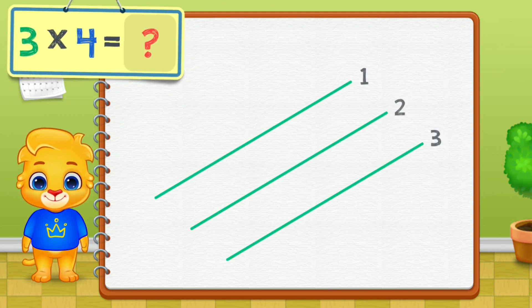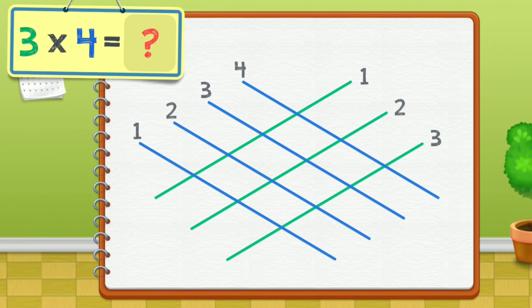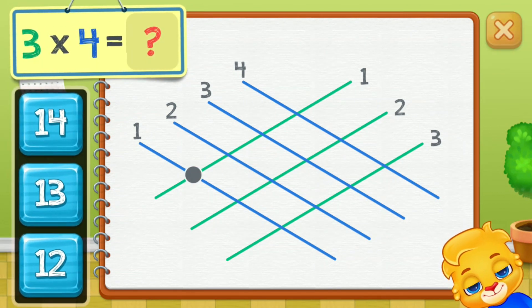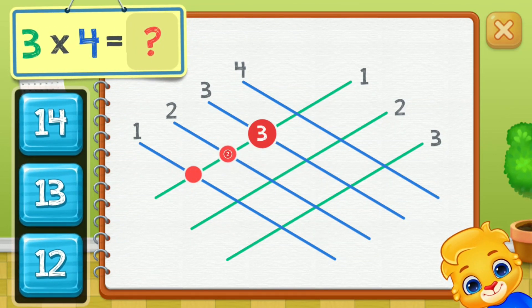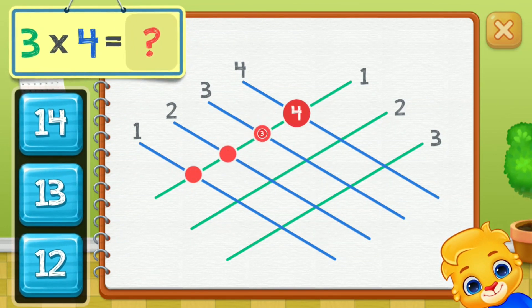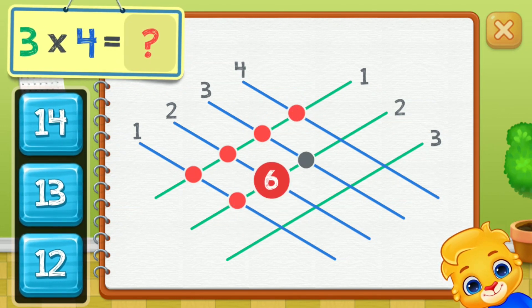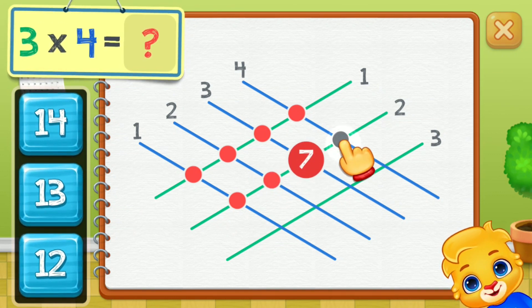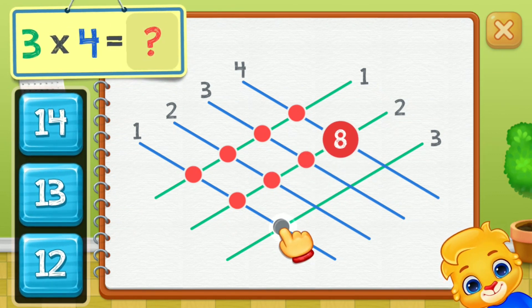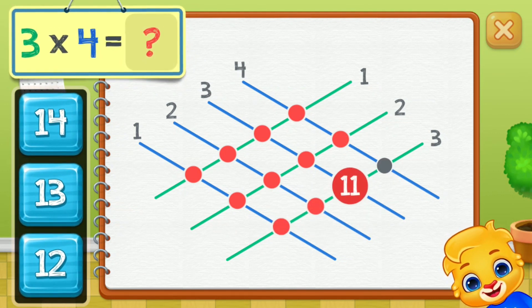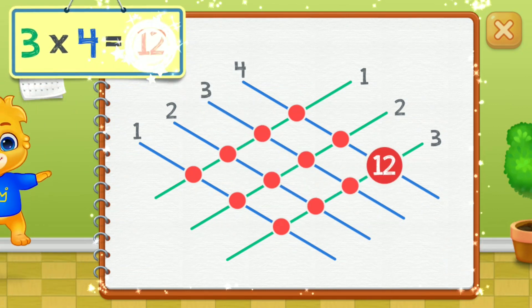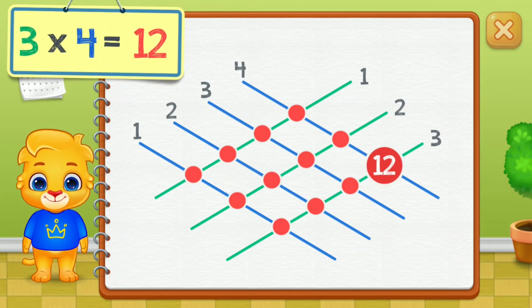Three times four equals — count the intersection points: two, three, four, five, six, seven, eight, nine, ten, eleven, twelve. Three times four equals twelve.